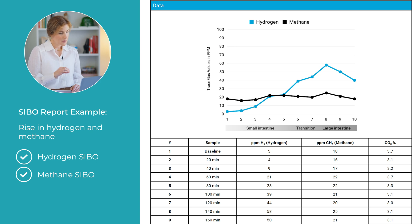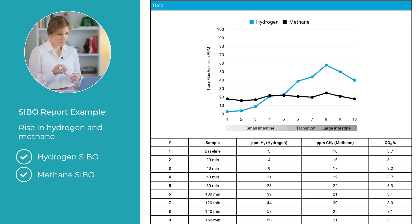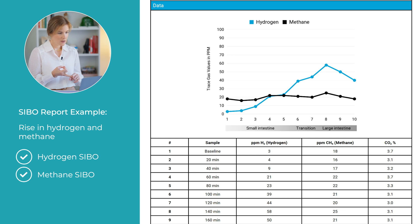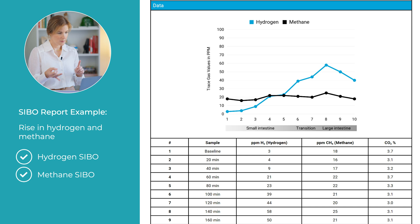The time intervals are either expressed as the test tube number starting from one as the baseline, the actual time of day each sample was taken, or in time increments such as 20 minutes, 40 minutes, 60 minutes, etc.